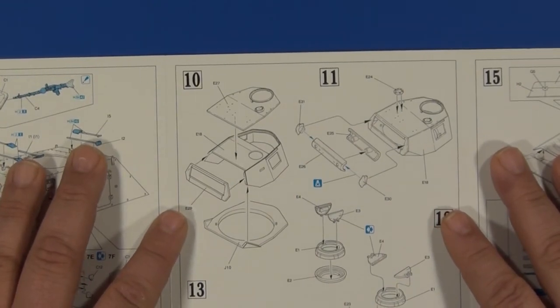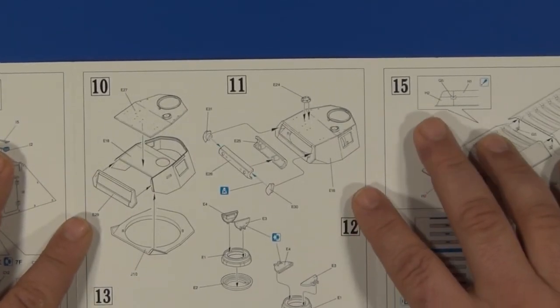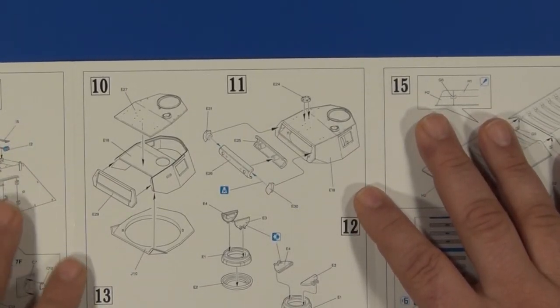Step ten: major turret assembly. Step eleven: initial mantlet assembly.